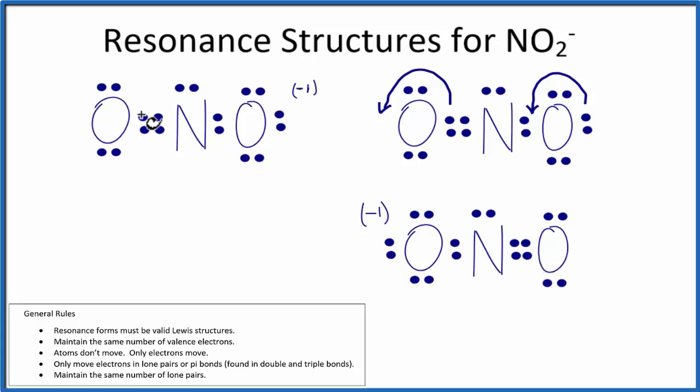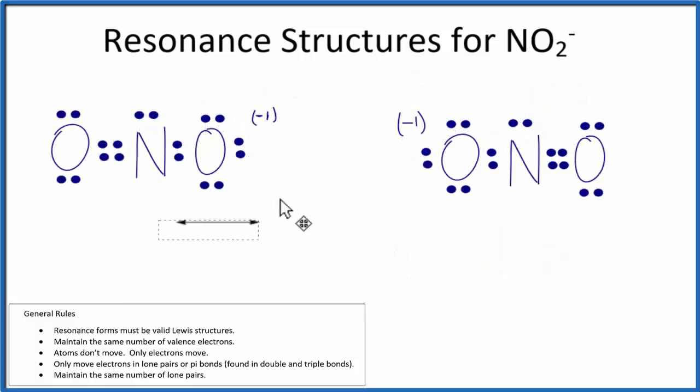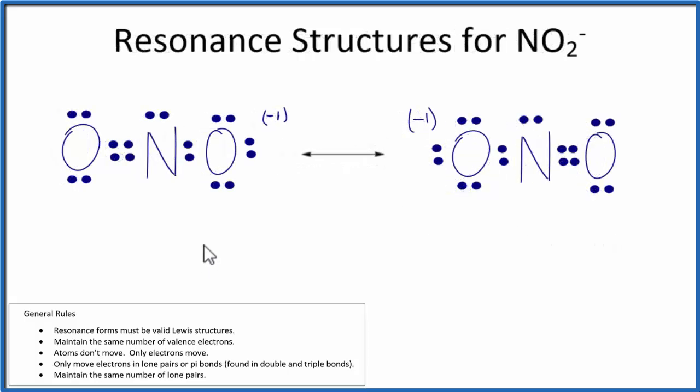You might say it's really just the same thing as what we had originally. That's because this is considered an equivalent resonance structure for NO2-. We can put them next to each other, and by convention, we'll put this double-ended arrow between them.